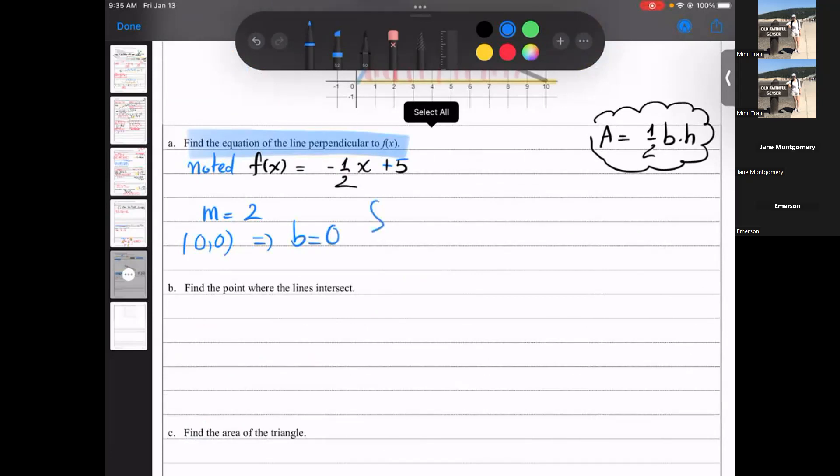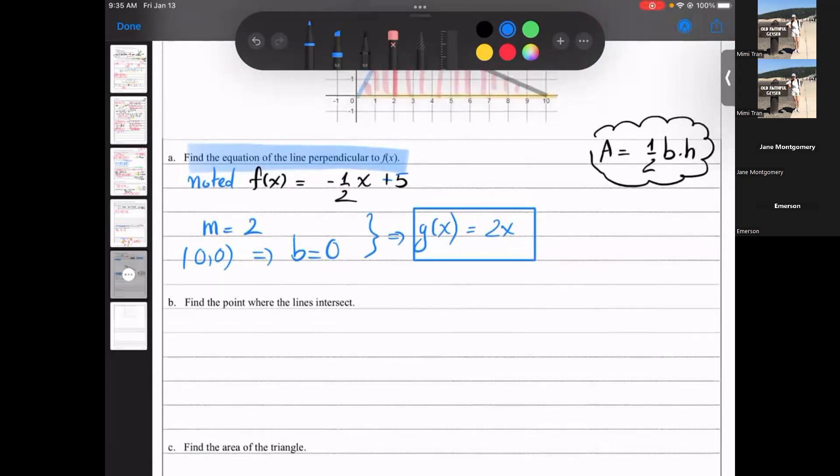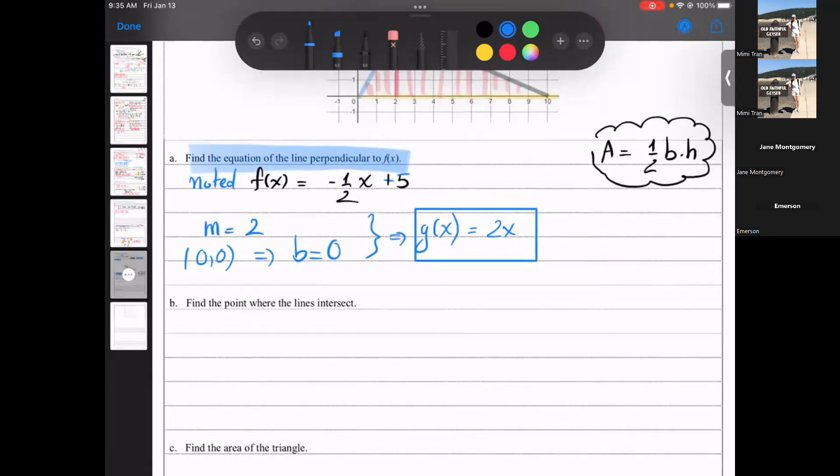So if you plug it in, if you plug it in from the two information, f of x, well, I will call it g of x, equal 2x plus zero, which is just 2x. I got ahead of myself all the way to c, though, not b.